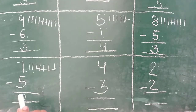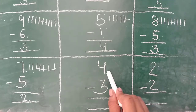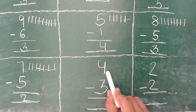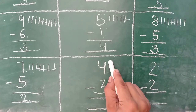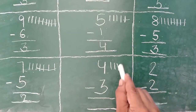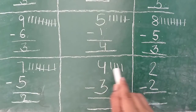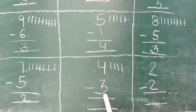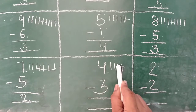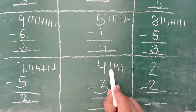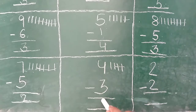Ok everyone. Rai sab ko samaj me? Next bata ye. Very good. Four lines draw karenge. One, two, three, four. Or cross kitni karenge? Three. Kya ki niche three hai. One, two, three. Bata ye kitna bach gaya? One. Very good. Answer is one.